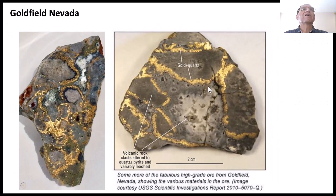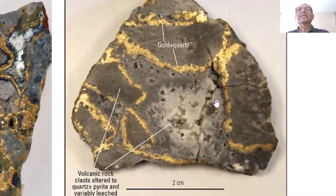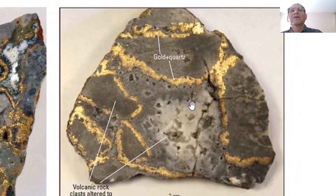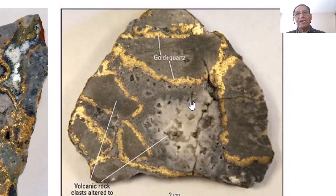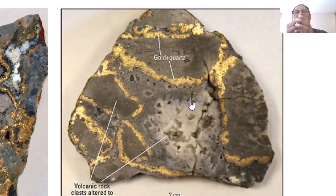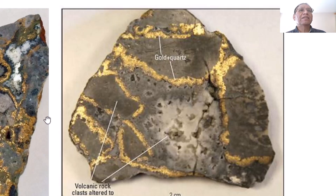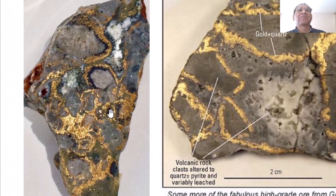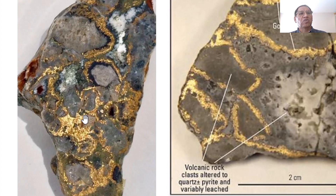This is from Goldfields, Nevada. As we can see, this is native gold filling the spaces or fractures — the fracture opening spaces. And as you can imagine, how rich is the gold grade? That's the advantage of oxidation in the supergene environment. So the gold values are going to reach up.